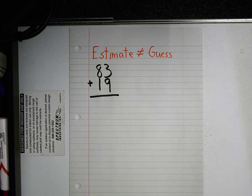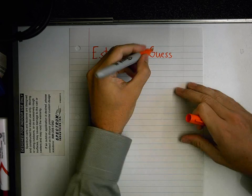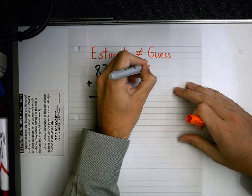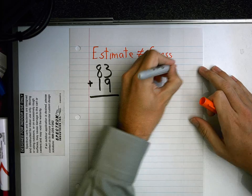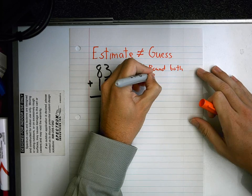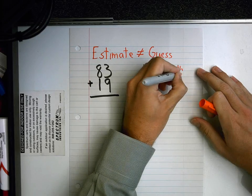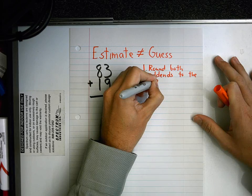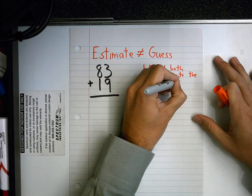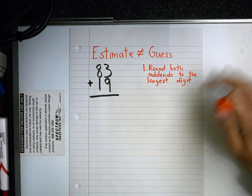I'm estimating. Estimating is guessing on top of it. No, no, no. When we estimate, the first thing we do is step number one: round both addends to the largest digit. The largest digit in both of these are tens, isn't it? So I'm gonna underline my tens.